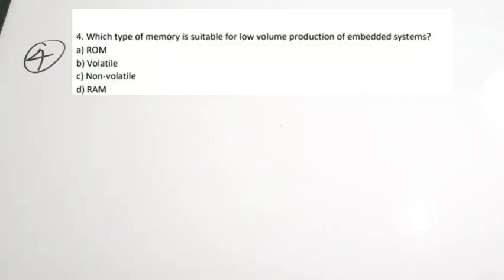Question four: which type of memory is suitable for low-volume production of an embedded system? Options: A — ROM, B — volatile, C — non-volatile, D — RAM. We can go for non-volatile memory, because when producing a low-volume system, a device with non-volatile memory allows software to be downloaded into the system and retained within the device. The correct answer is C — non-volatile.